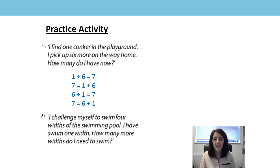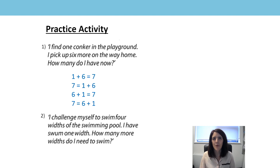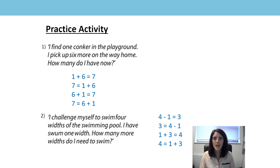Let's have a look at the second question. I challenge myself to swim four widths of the swimming pool. I have swum one width. How many more widths do I need to swim? You may have that four subtract one equals three, because you had to swim four widths of the swimming pool and you'd only done one so far, so one less than four is three. That links to your last lesson. And then some of you might have noticed that one add three equals four, so you used your related facts to help you.